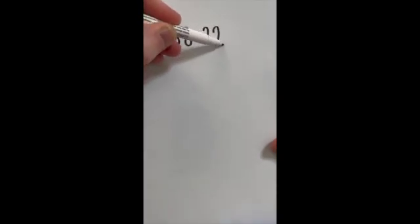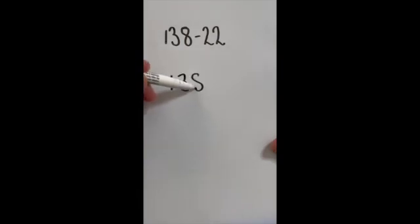We're now going to look at some things that you could make a mistake on. We'll start off with 138 take away 22. If I set this out as 138 and I'm taking away 22, you've probably spotted the mistake I've made.